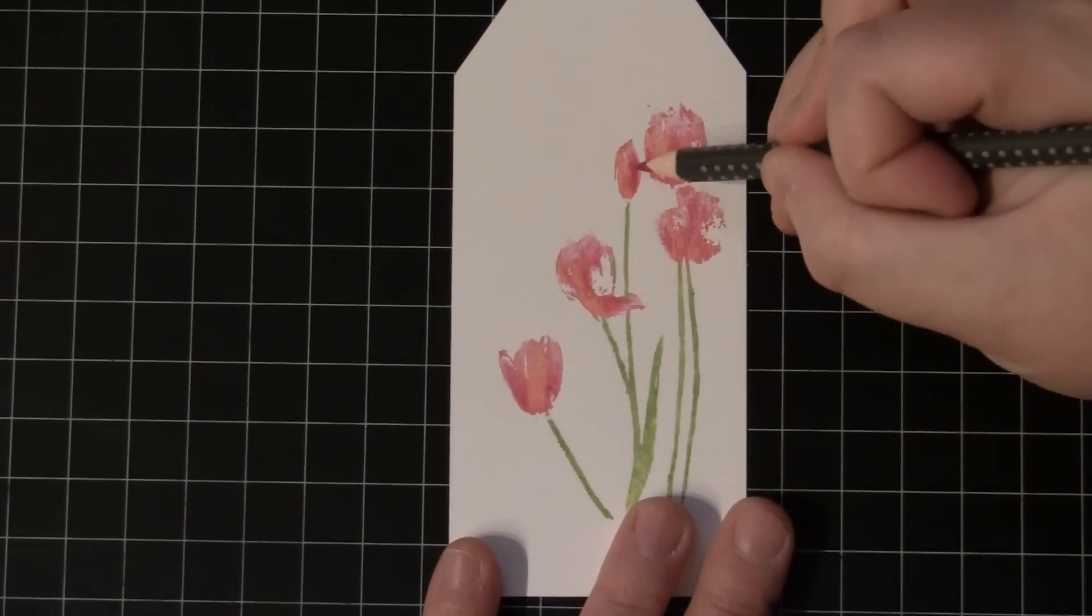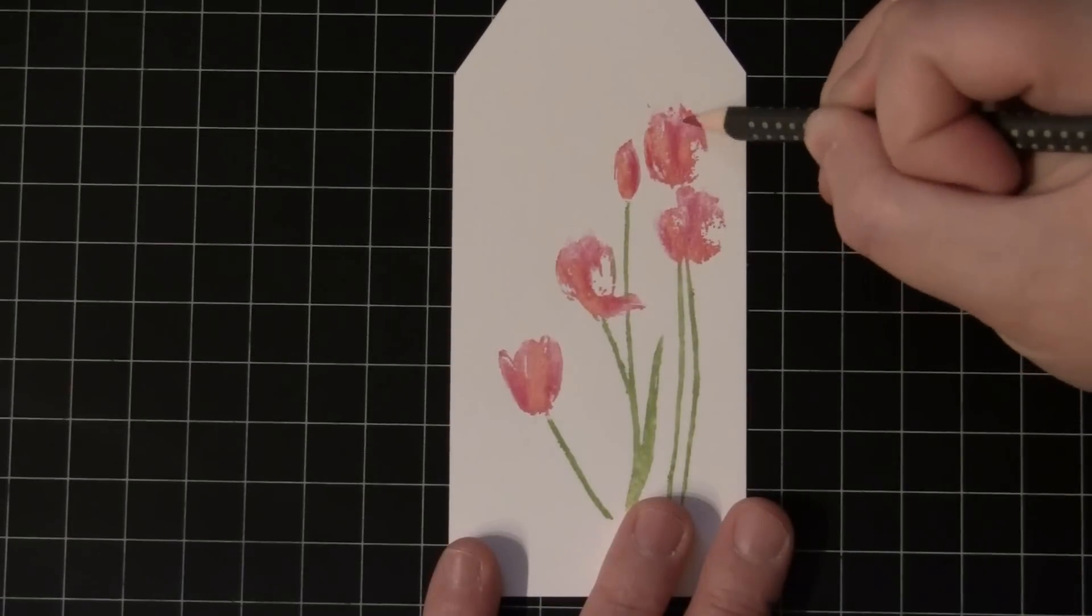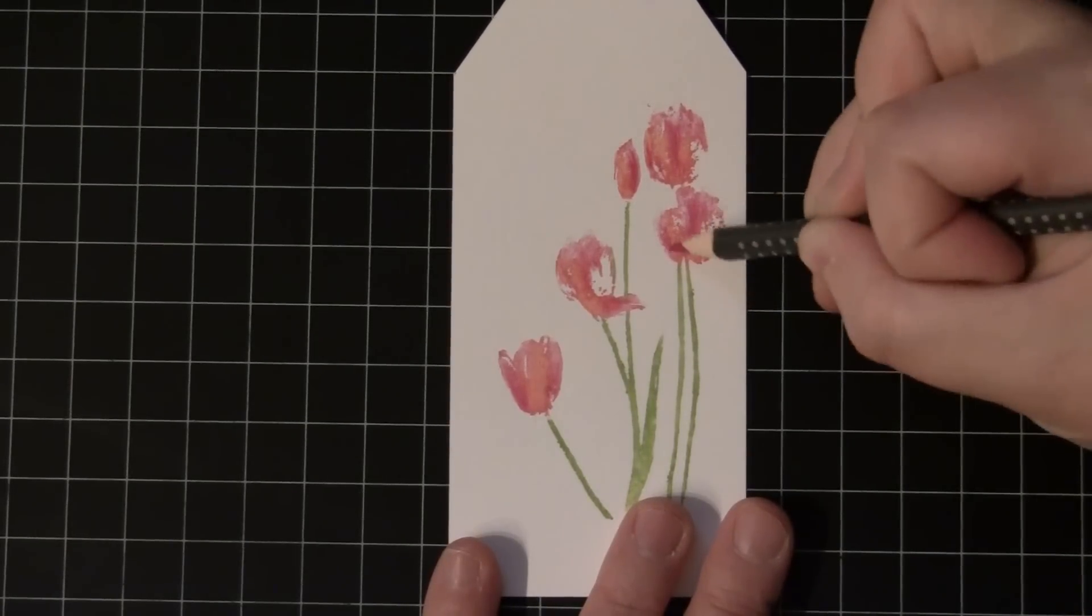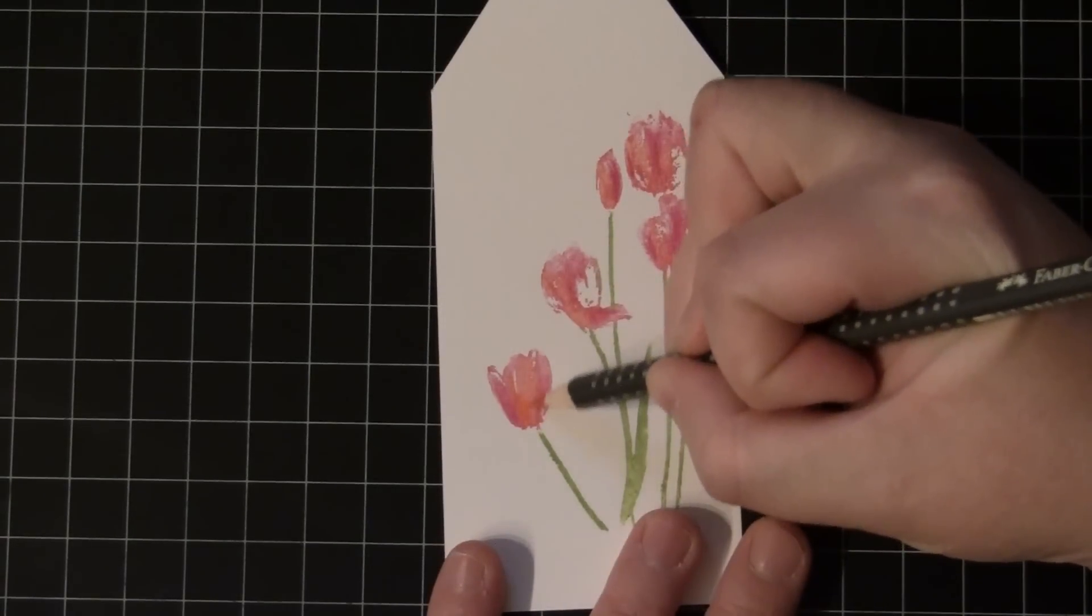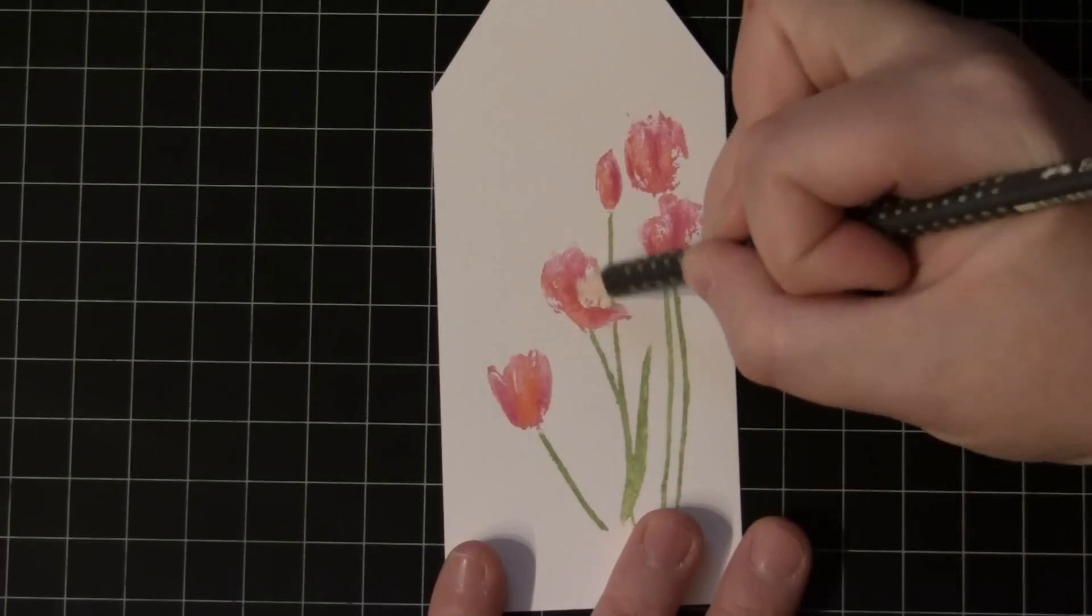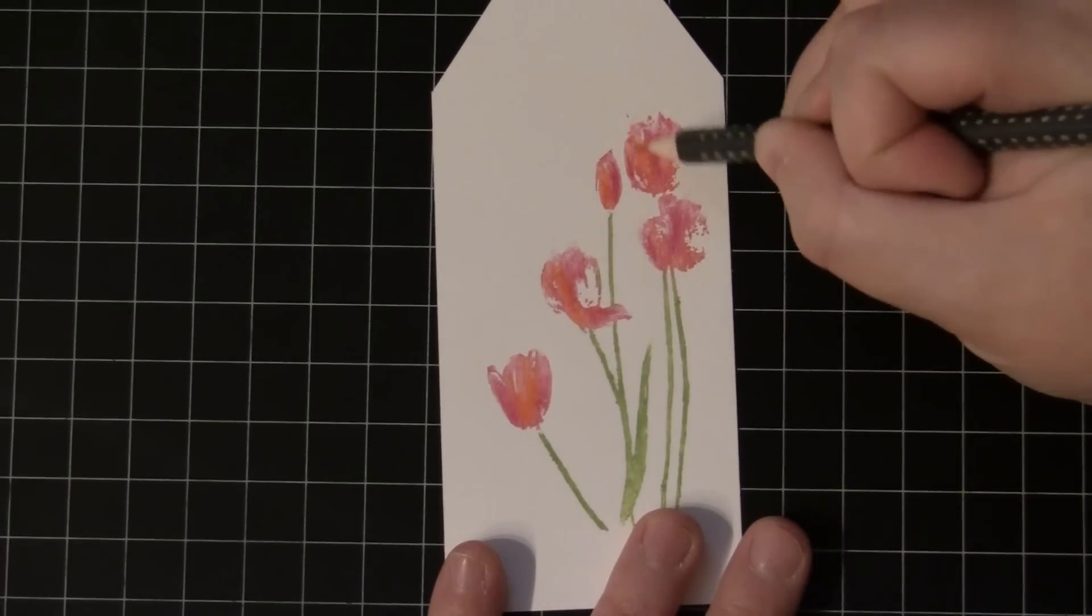And I love in the end how this gives us an almost hand-drawn look or painted look using these brushstroke stamps. And I'll do the same here with the orange, just adding a little extra shading, darkening it up a little bit near mainly the base of the flower.